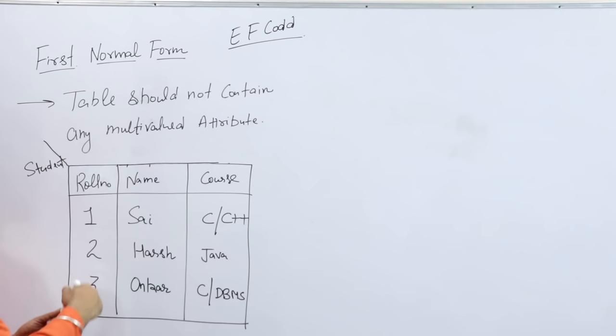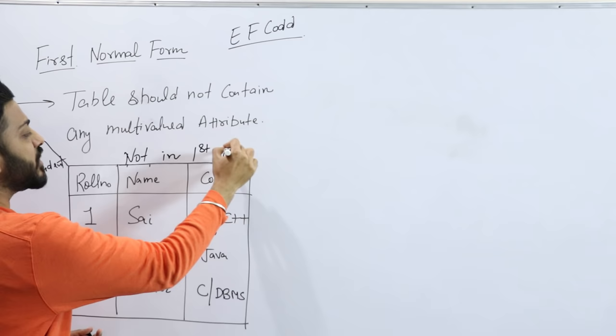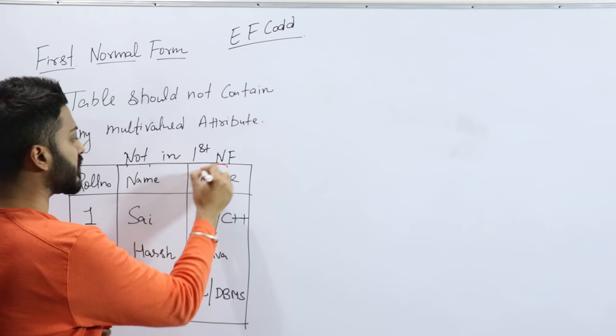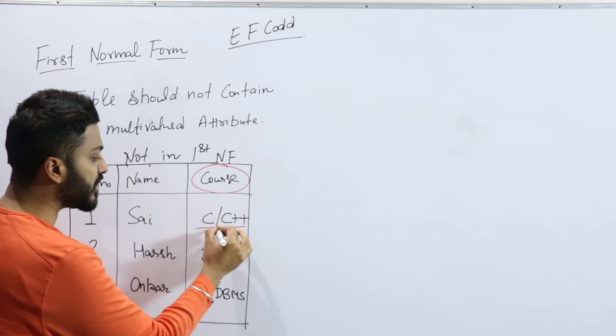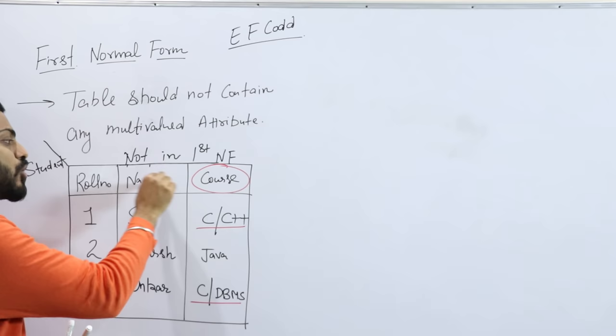I can clearly say this table is not in first normal form because the course is the problem. For the course attribute, there are multiple values for a single student, and even for Onkar there are multiple values. So if even a single attribute in your table has more than one value existing, then you can clearly say that table is not in first normal form.